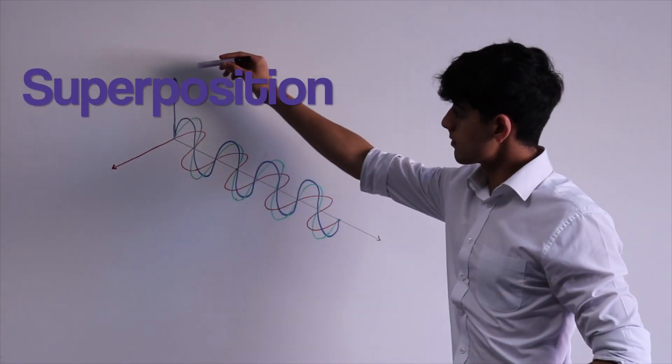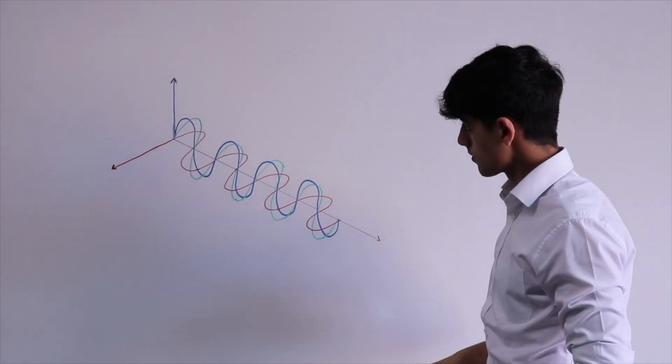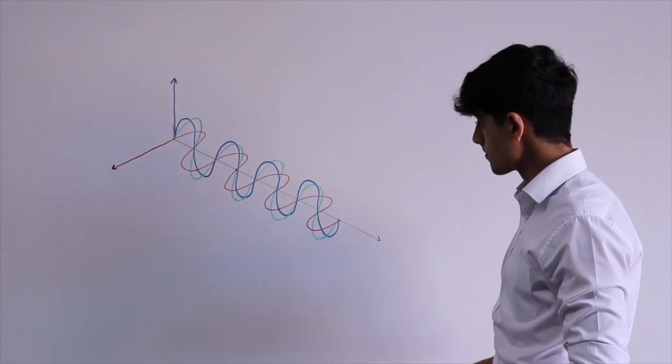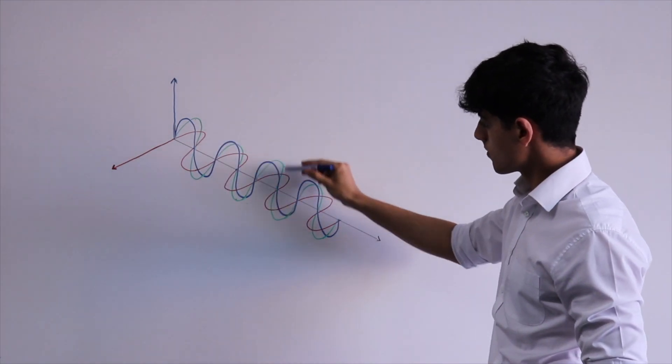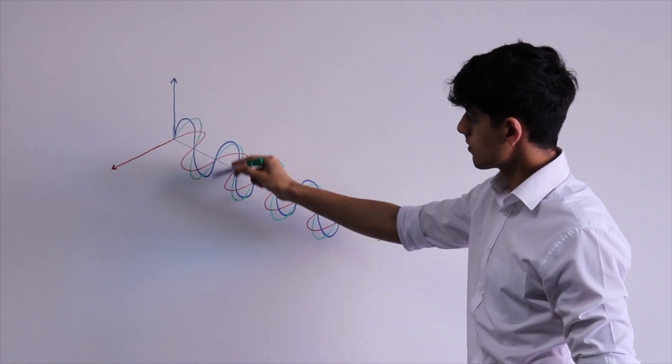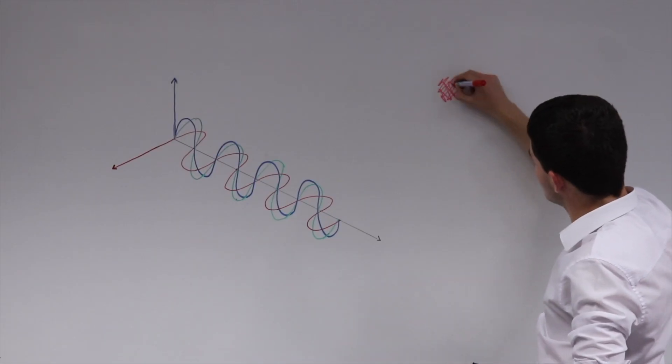Superposition. So firstly, if you consider this 3D diagram, where one light wave in red is oscillating horizontally, and another light wave in blue is oscillating vertically. These waves interfere with each other, forming the green wave, which is effectively the sum of the other two waves. This is called superposition.